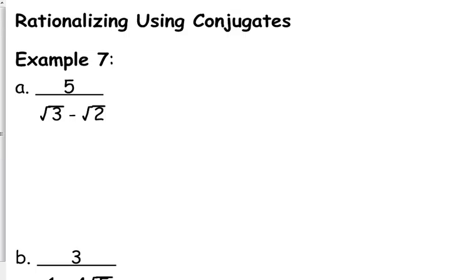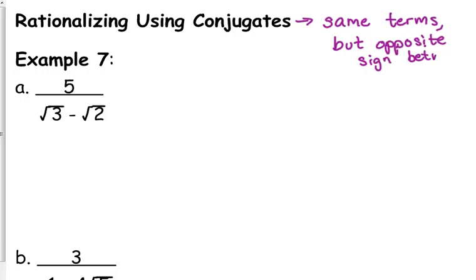Now, what conjugate means, if you have not heard that word before, that means you have the same terms but the opposite sign in between. So the conjugate of square root of 3 minus the square root of 2 is the square root of 3 plus the square root of 2. We don't change the sign on the square root of 3. We only change the sign in the middle.